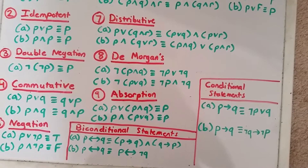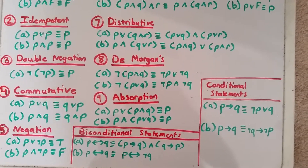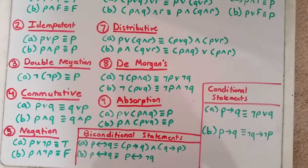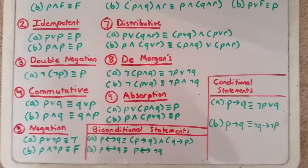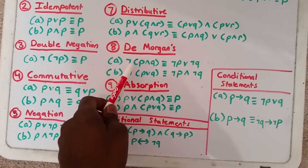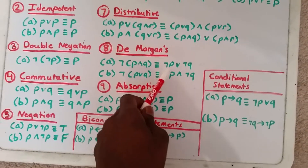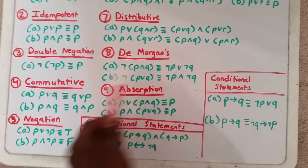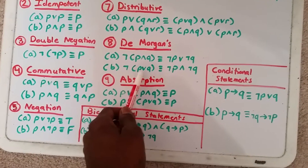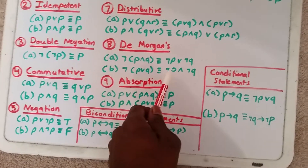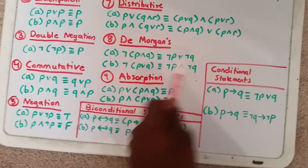Next, we have DeMorgan's law — another very useful law for the more complicated proofs. Not (P and Q) is logically equivalent to not P or not Q. And not (P or Q) is logically equivalent to not P and not Q.